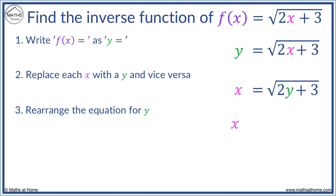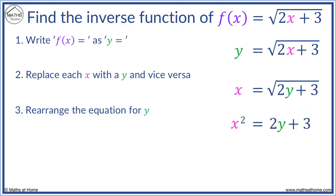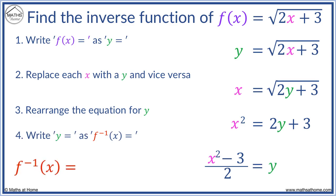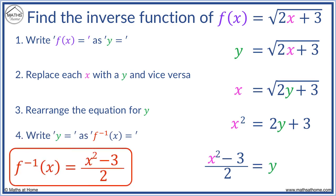We get x squared, and the square root is removed on the right-hand side. Now we need to subtract 3, then divide by 2. We get x squared minus 3 over 2, equals y. Finally, we write the inverse function equals x squared minus 3 over 2.